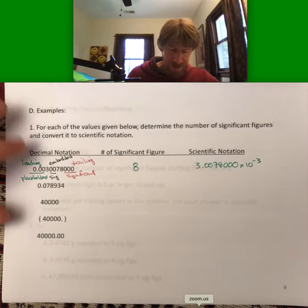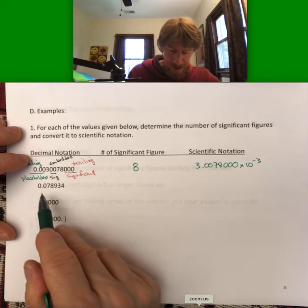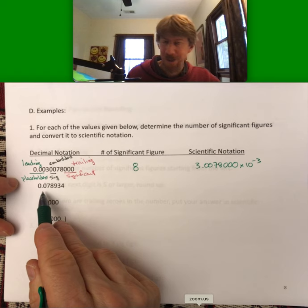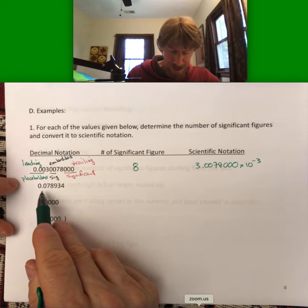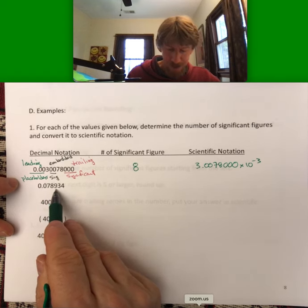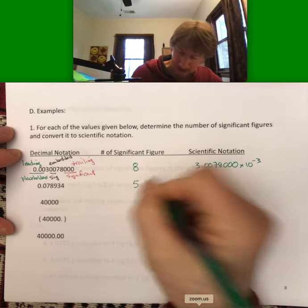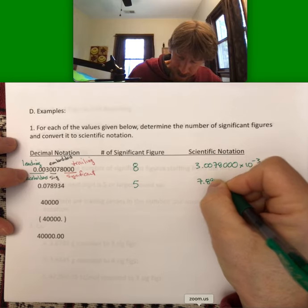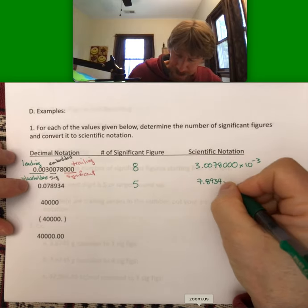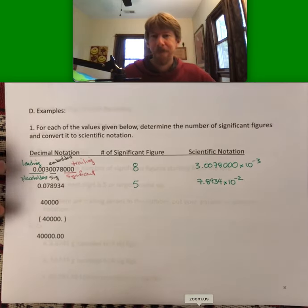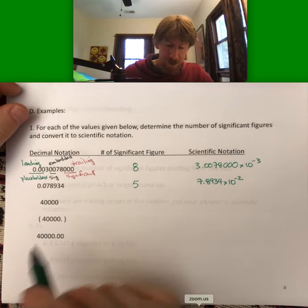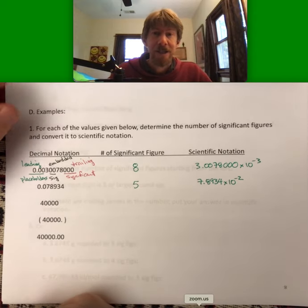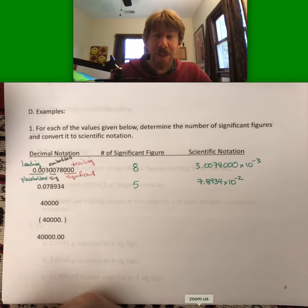Next one here, we have only leading zeros which are placeholders and are not significant. So we'll start here: one, two, three, four, five significant figures, and 7.8934 times ten to the minus two. Now you'll notice that I'm writing all of these digits, and it is important not to cut things off that are already written on the page.